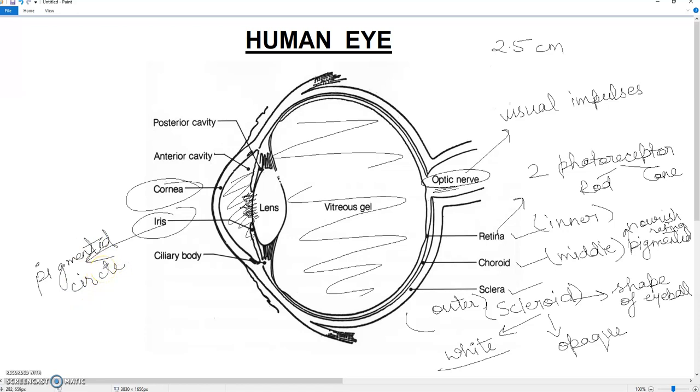This pigmented circle is attached to the ciliary body. You can see the ciliary body in front of the lens, and its pigment gives color to the eye like black, blue, or green.